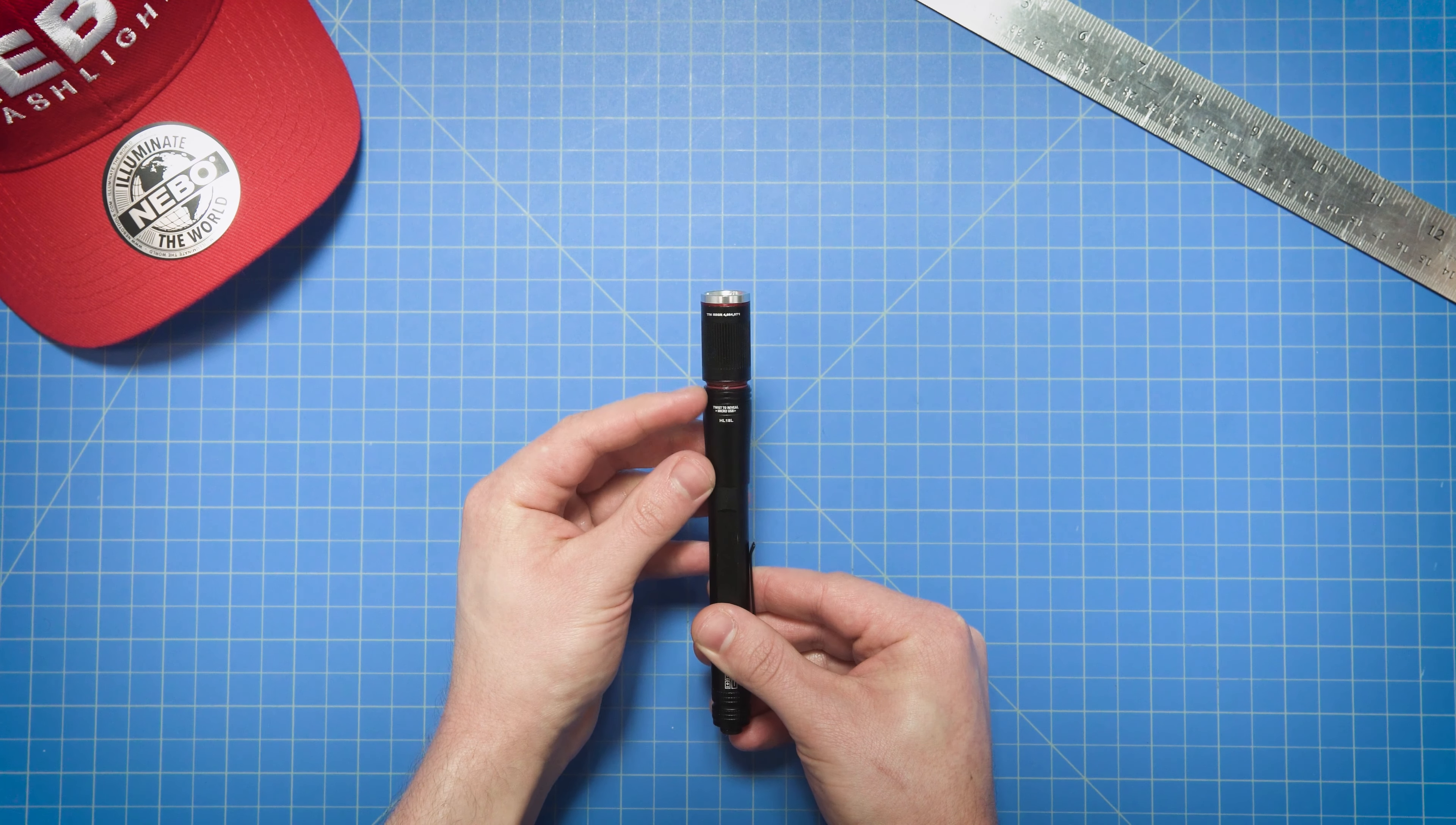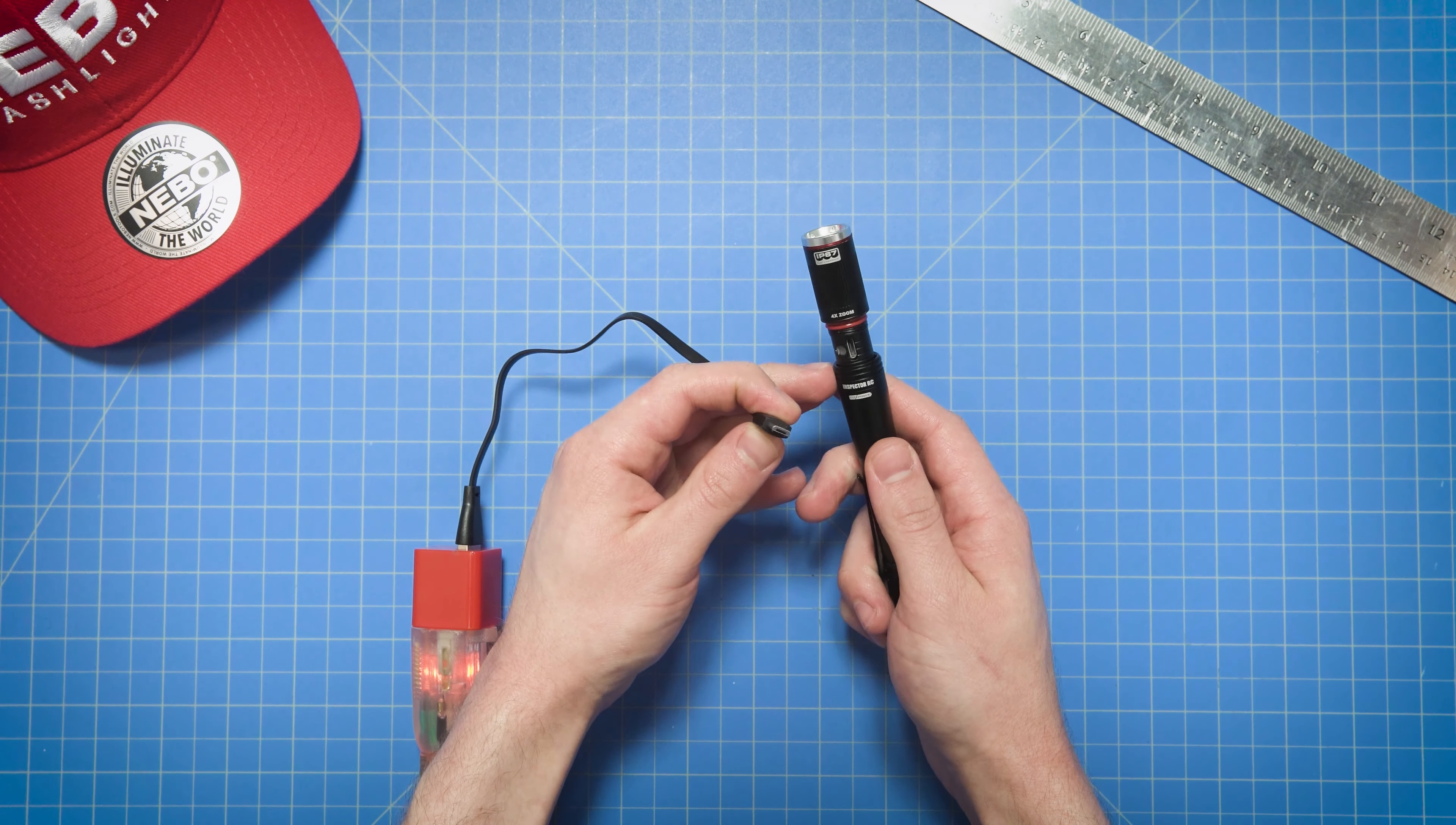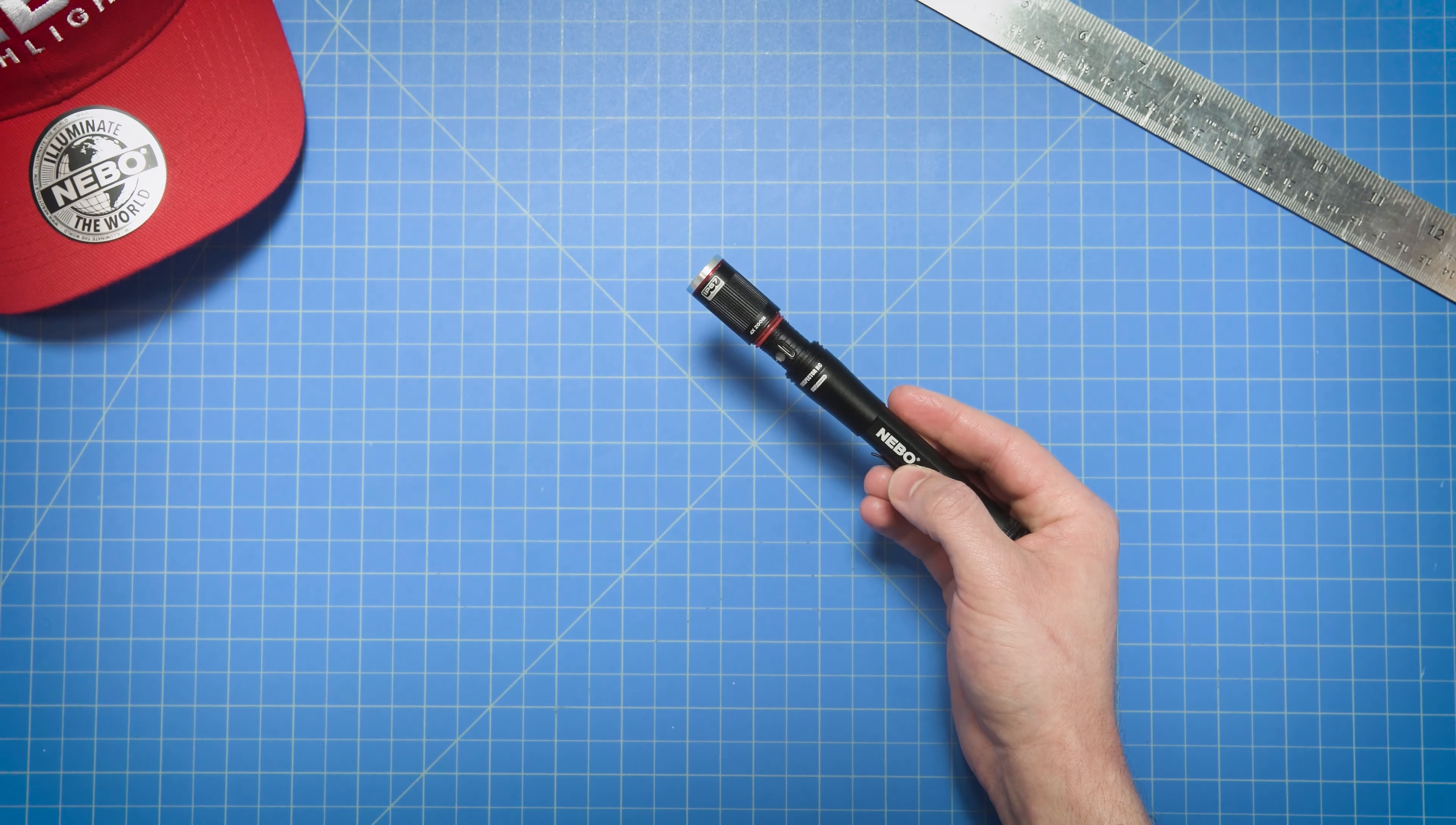Once you see the red watertight seals, simply push the cover down to reveal the micro USB port. Plug the included micro USB cable into your USB charging block and then into the micro USB port on the Inspector RC. The light next to the micro USB port will shine red while charging and will turn blue when fully charged. Charging may take up to three hours.